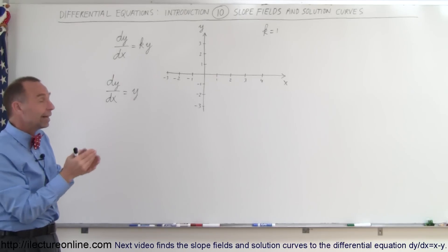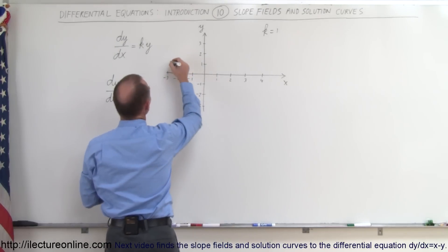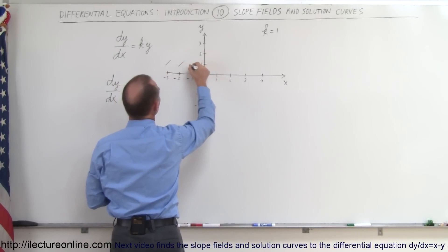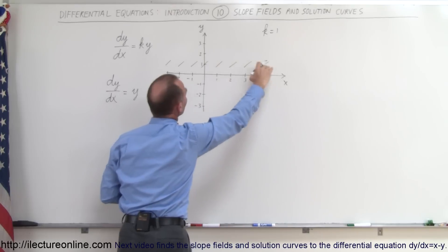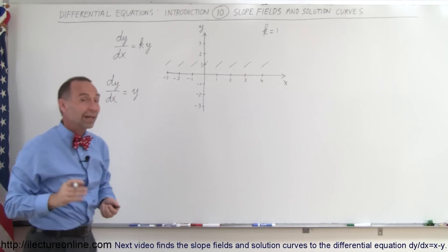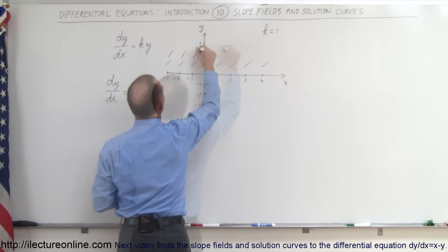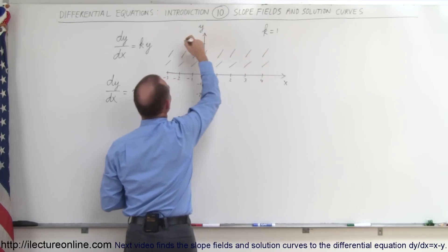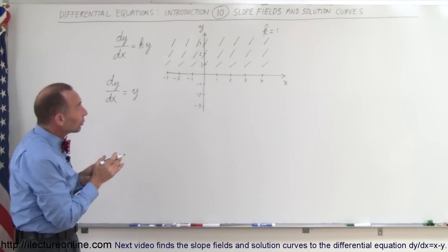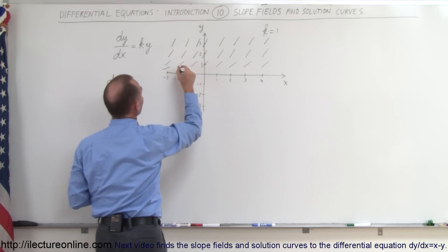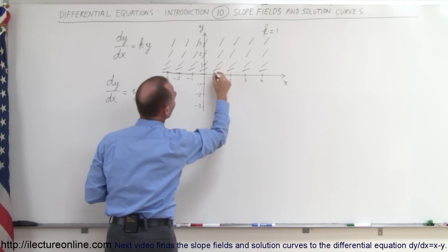Let's go to every point on the xy plane and define what the slope looks like at those locations. Anywhere where y is equal to 1, the slope would be 1 — so everywhere along the line y equals 1, the slope is 1. Everywhere along the line y equals 2, the slope is equal to 2, so the slope will be a little bit steeper. When y is equal to 3, the slope would be steeper again. When y is equal to 1 half, the slope would be 1 half. And when y is equal to 0, the slope would be 0, so here on the x-axis the slope would be 0.